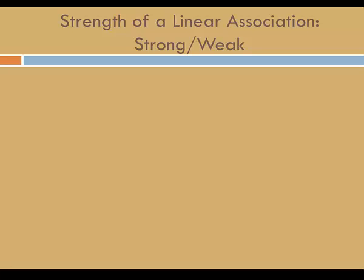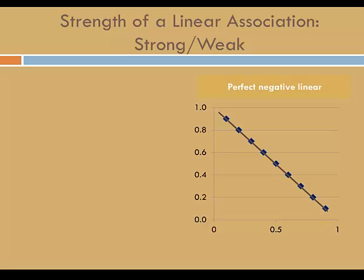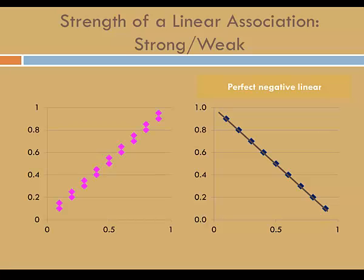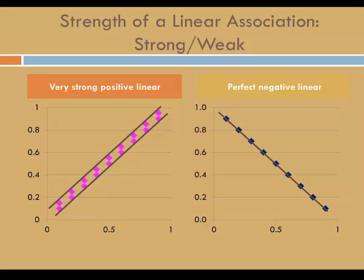So say that there is a linear association. Is there a strong linear association, a weak linear association, or somewhere in between? How well do the markers line up? In this example, it looks like the markers line up perfectly — this is a perfect negative linear association. In this example, the markers don't exactly line up, but they're pretty close. All the markers fall within a very narrow band. This is an example of a very strong positive linear association. It's not perfect, but it's pretty close.